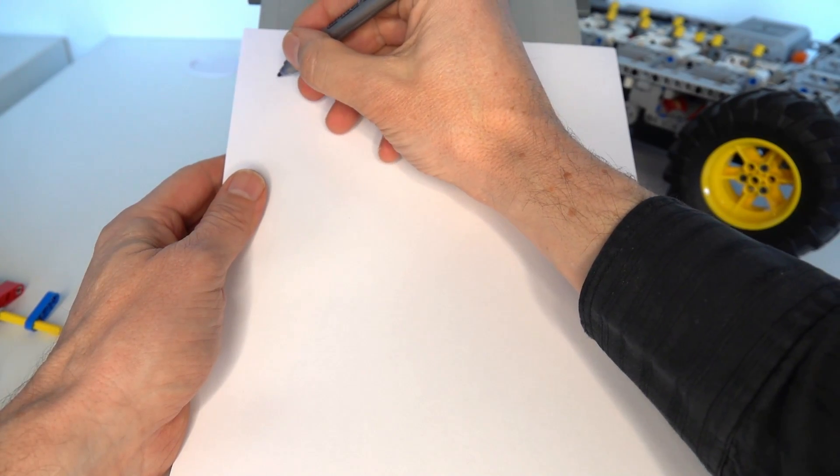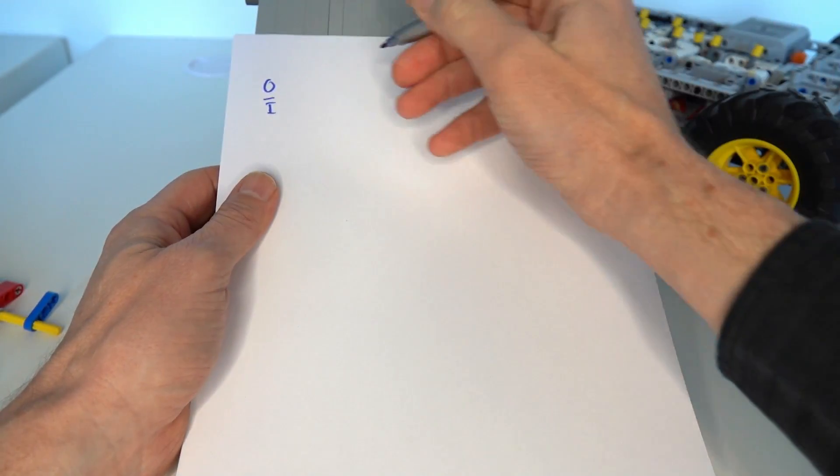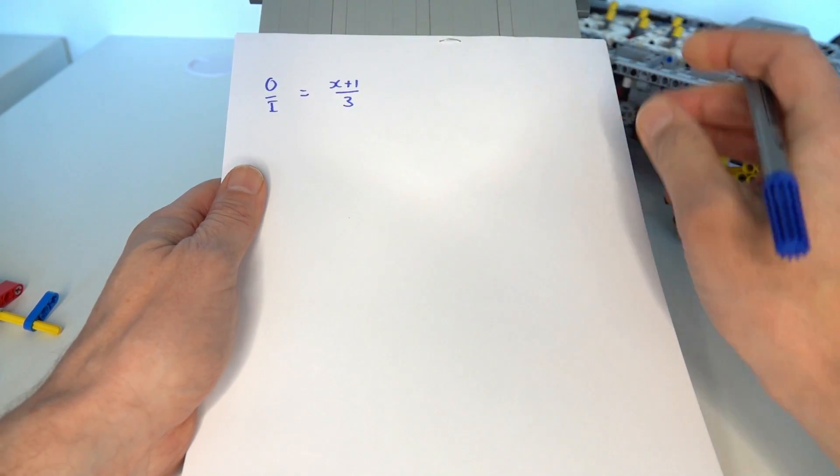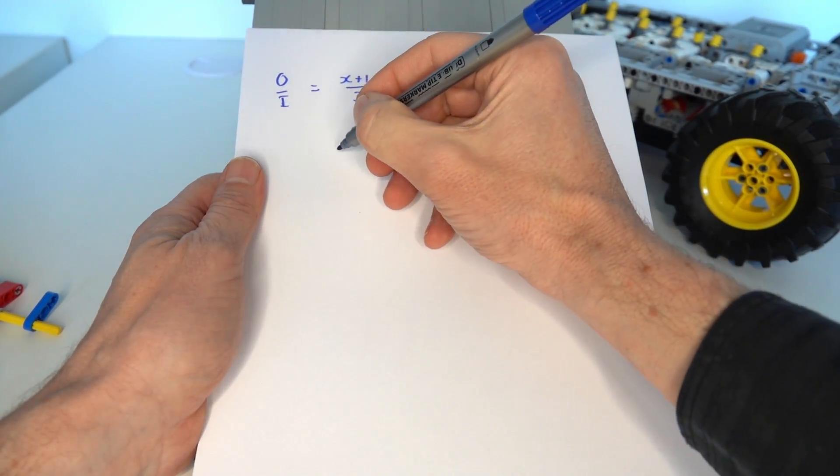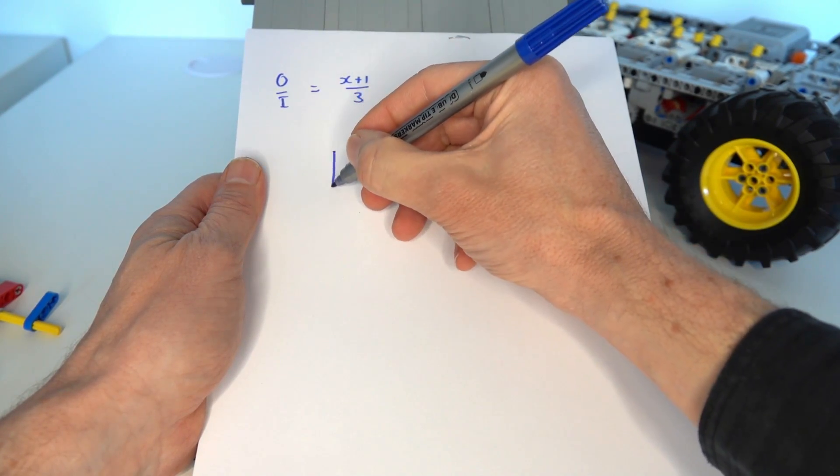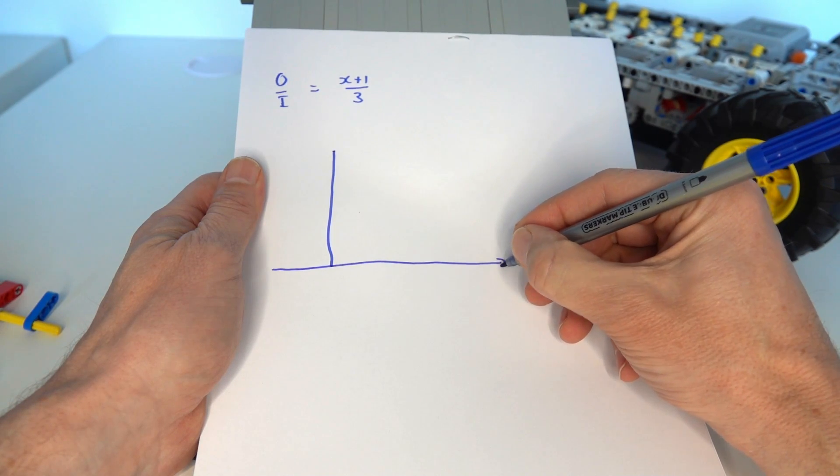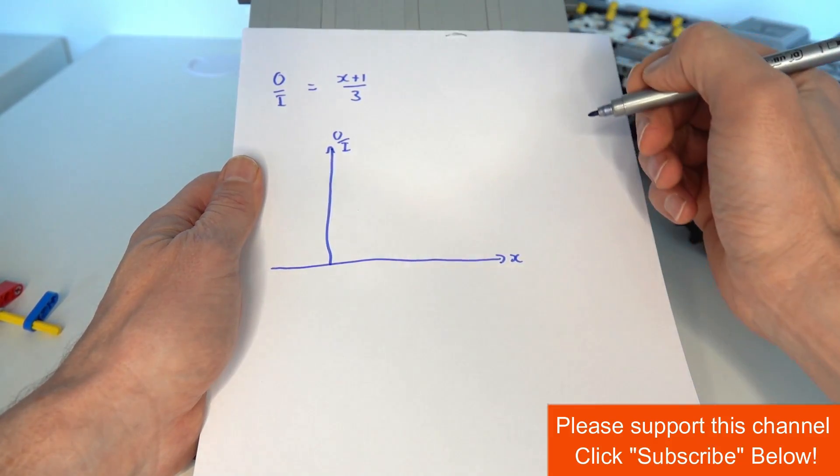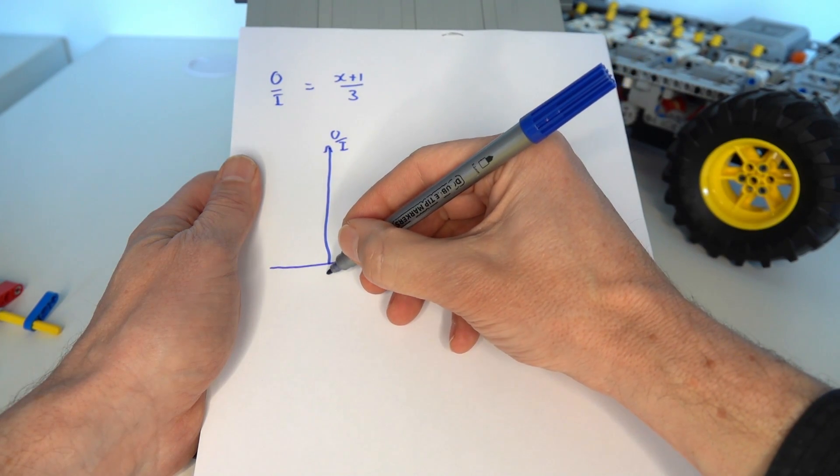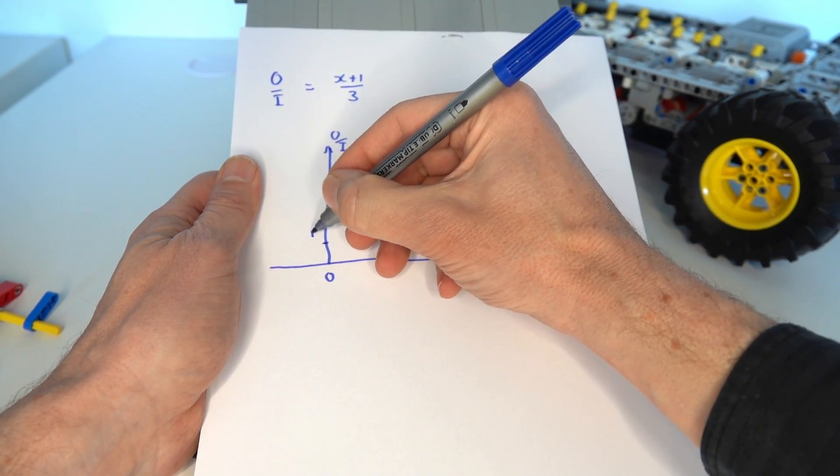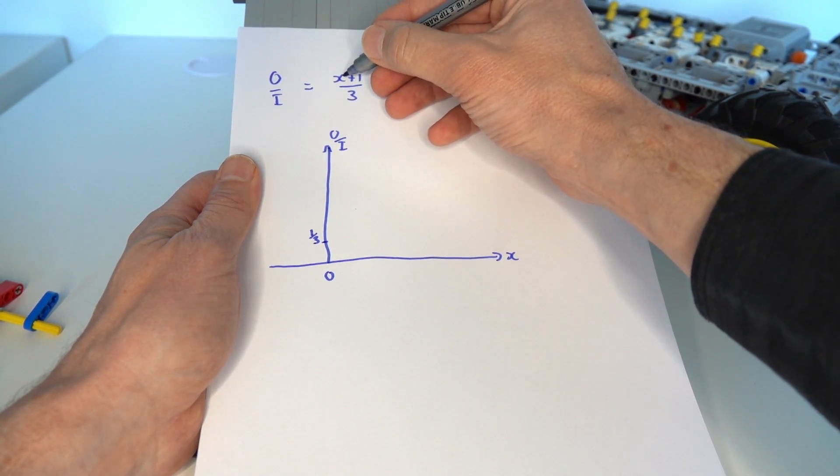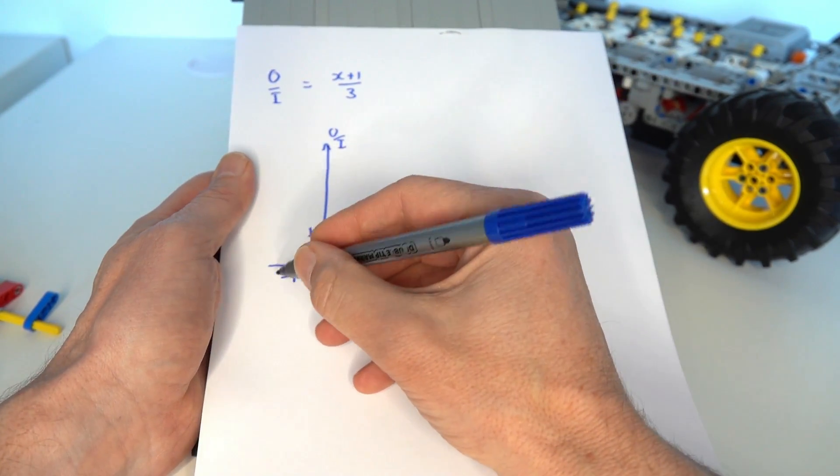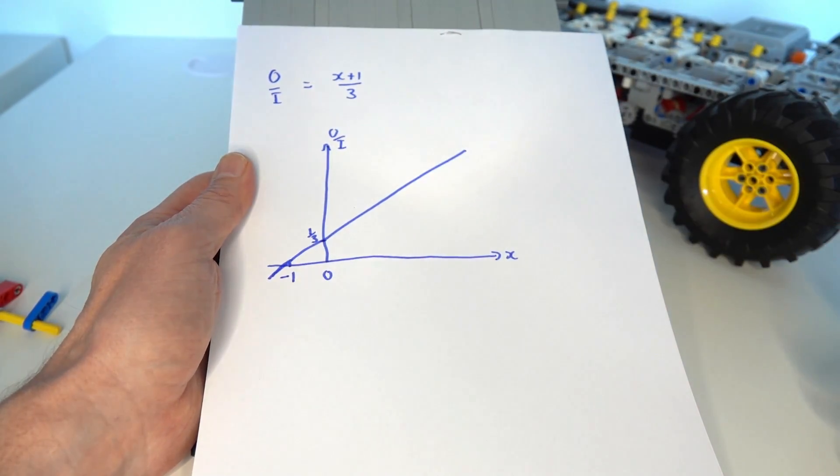So again if we write that output to input ratio for a specific example of n is equal to 3 then we like I said before we have x plus 1 over 3 and to understand the equation a little bit better it's easier to draw it on a graph. So obviously it's a linear equation, we can draw the axis here so on the bottom here we've got x, on the top we've got o divided by i which is the output to input ratio. Like I say it's a linear graph so when x is equal to 0 we have a value of 1 third being the output ratio. When x is minus 1 then minus 1 plus 1 is 0 so at the minus 1 point we have 0 and then the rest is simply a linear equation going through there.